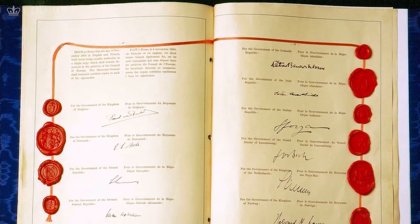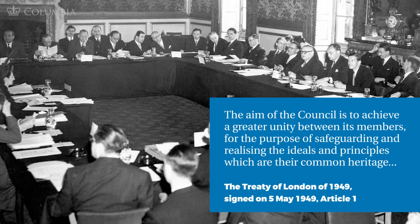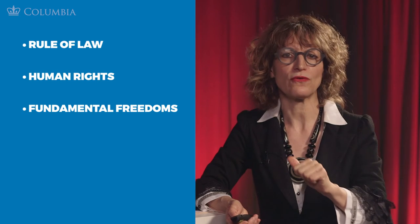In 1949, the governments of 10 European countries established the Council of Europe through the Treaty of London, whose Article I states: the aim of the Council is to achieve a greater unity between its members for the purpose of safeguarding and realizing the ideals and principles which are their common heritage. Its Article III identified these ideals as follows: every member of the Council of Europe must accept the principles of the rule of law and the enjoyment by all persons within its jurisdiction of human rights and fundamental freedom. Rule of law, human rights, fundamental freedom — these were neither aspirational nor theoretical. They were real, and I think they have become increasingly so.